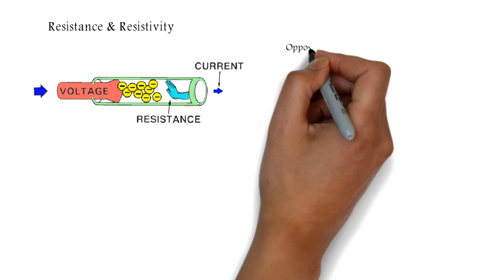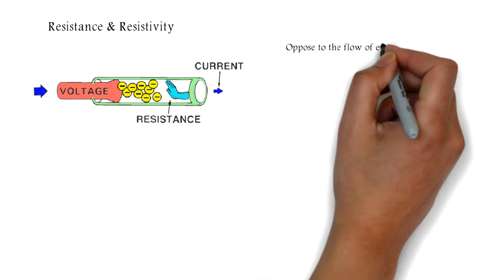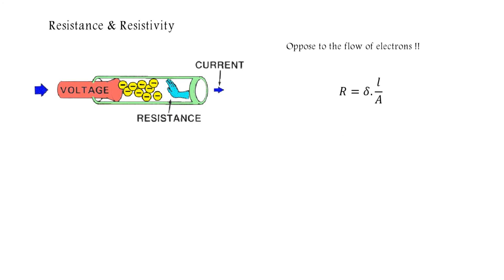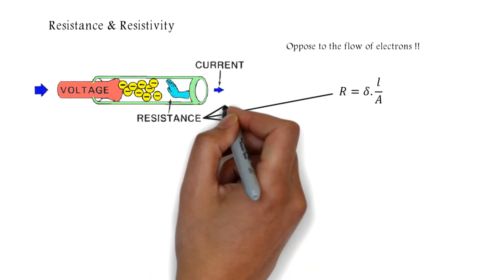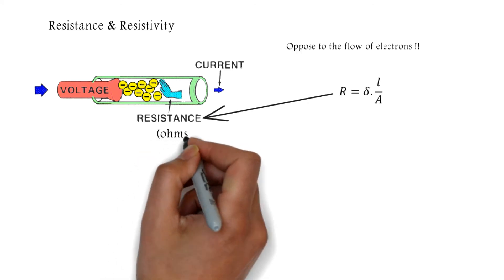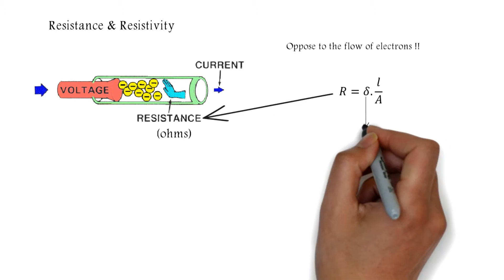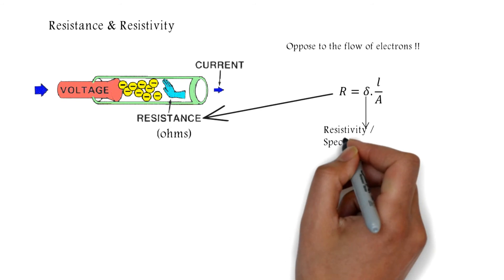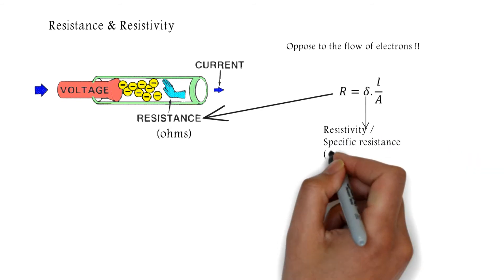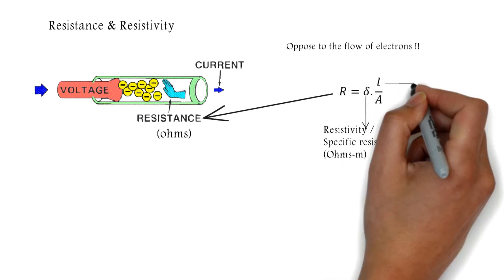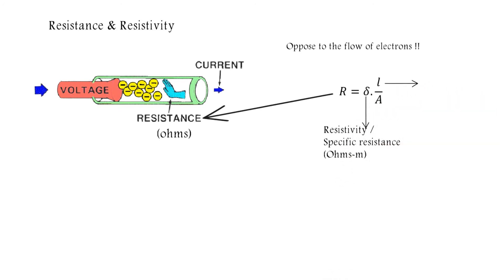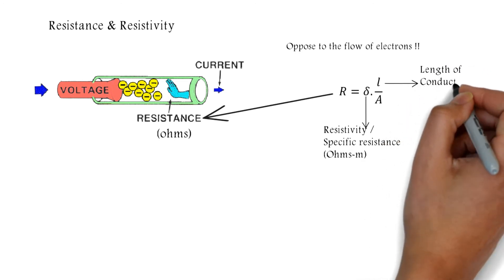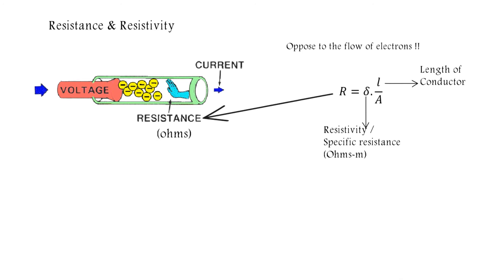Resistance is opposed to the flow of electrons, and R equals ρ times L divided by A, where R is the resistance in ohms, ρ (rho) is the resistivity or specific resistance in ohms, L is the length of the conductor expressed in meters, and A is the cross-sectional area of the conductor expressed in square meters.